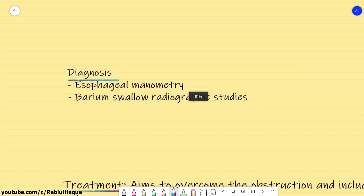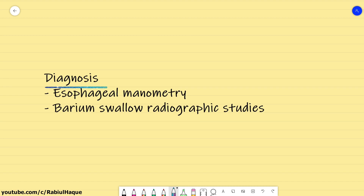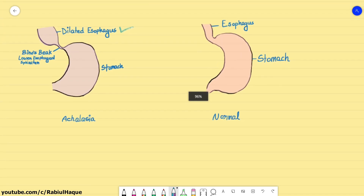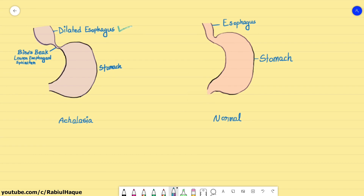How can we diagnose a case of achalasia? Diagnosis is reached with esophageal manometry and barium swallow radiographic studies. Manometry findings include aperistalsis, high resting lower esophageal sphincter pressure, and increased intraluminal pressure; however, the pharynx and upper esophageal sphincter will have normal motor function. In barium swallow, patients with achalasia will show a dilated esophagus with smooth tapering and narrowing towards the end of the esophagus, giving an appearance known as bird's beak deformity. No peristalsis is seen.